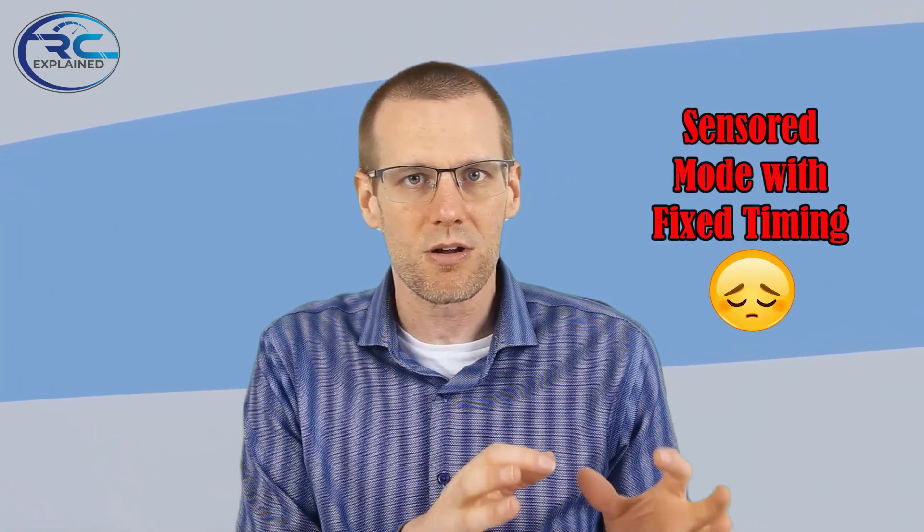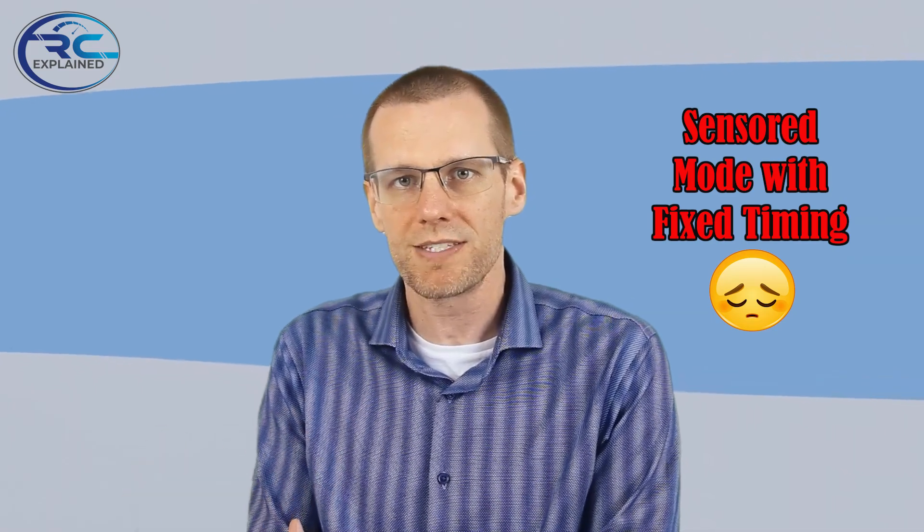So essentially, what you're doing when you're selecting only censored mode is you're essentially fixing that distributor. So no matter what engine speed you actually have within that vehicle, you're always going to get the same amount of timing. That might be good when you hit a certain RPM, it might be the perfect amount of timing for you to be able to control that engine very well at that specific amount of RPM at the specific load that that engine is under. And this is going to work quite well for you.